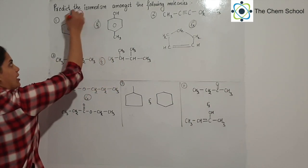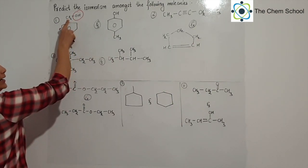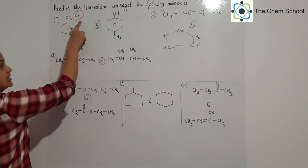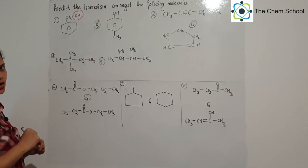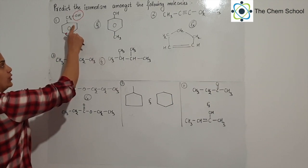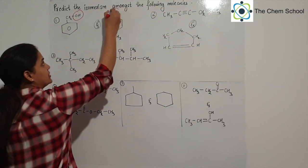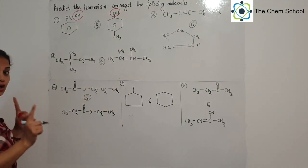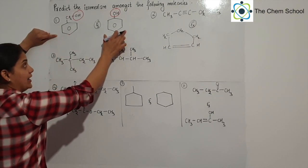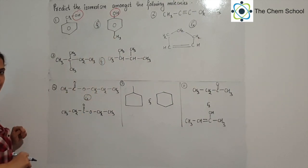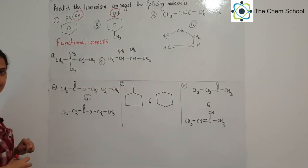OH is your functional group, which is alcohol, and here your functional group is carbon attached — so it will be considered aliphatic alcohol. If you see a benzene ring with OH attached, you would call it aromatic alcohol or phenol. But here it is not attached to the aromatic ring. So here your alcohol is aliphatic alcohol, while the other OH is attached to the ring — that makes it aromatic alcohol or phenol. Since these are two different functional groups, we will say that these are functional isomers.